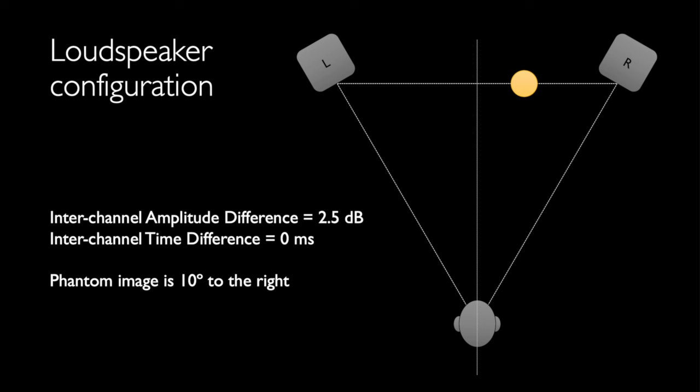Interchannel amplitude panning 10 degrees right: the right channel is 2.5 decibels louder than the left, interchannel time difference zero. Image should appear 10 degrees to the right, or one-third of the distance to the right loudspeaker. Interchannel amplitude panning 20 degrees right: the right channel is 5.5 decibels louder than the left, interchannel time difference zero. Image should appear 20 degrees right, or two-thirds of the distance to the right loudspeaker. Interchannel amplitude panning 30 degrees right: the right channel is 15 decibels louder than the left, interchannel time difference zero. Image should appear at 30 degrees right, in the right loudspeaker.